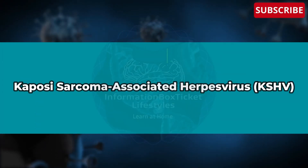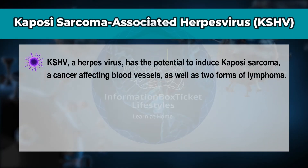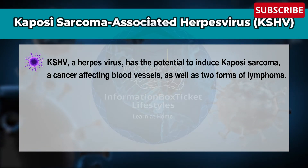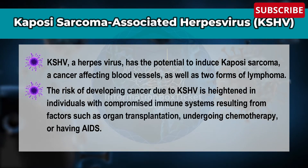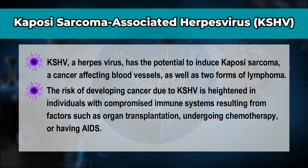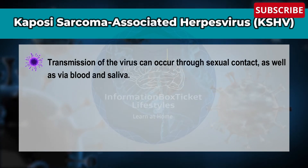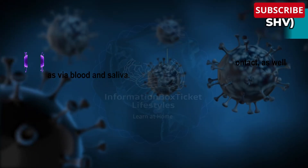Next, Kaposi Sarcoma-Associated Herpesvirus. It is a herpesvirus that has the potential to induce Kaposi sarcoma, a cancer affecting blood vessels, as well as two forms of lymphoma. The risk of developing cancer due to this virus is heightened in individuals with compromised immune systems, resulting from factors such as organ transplantation, chemotherapy, or having AIDS. Transmission of the virus can occur through sexual contact as well as through blood and saliva.